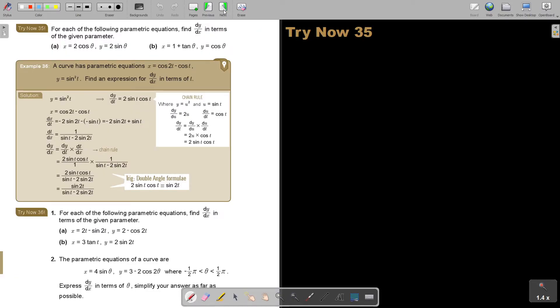Okay, I want you to stop the video. And I want you to do number B. Again, you can continue the video as soon as you are finished. Number B. X is equal to 1 plus tan theta. And Y is equal to cos theta.